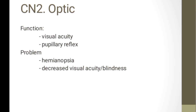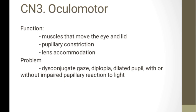Cranial nerve 3 is the oculomotor. Its function is for movement of the eyelid, pupillary constriction, ciliary constriction, and lens accommodation — meaning the ability of the eye to focus on objects at different distances. Problems include conjugate gaze abnormality where eyes do not align or move together, diplopia or double vision, dilated pupil, and altered pupillary reaction to light.